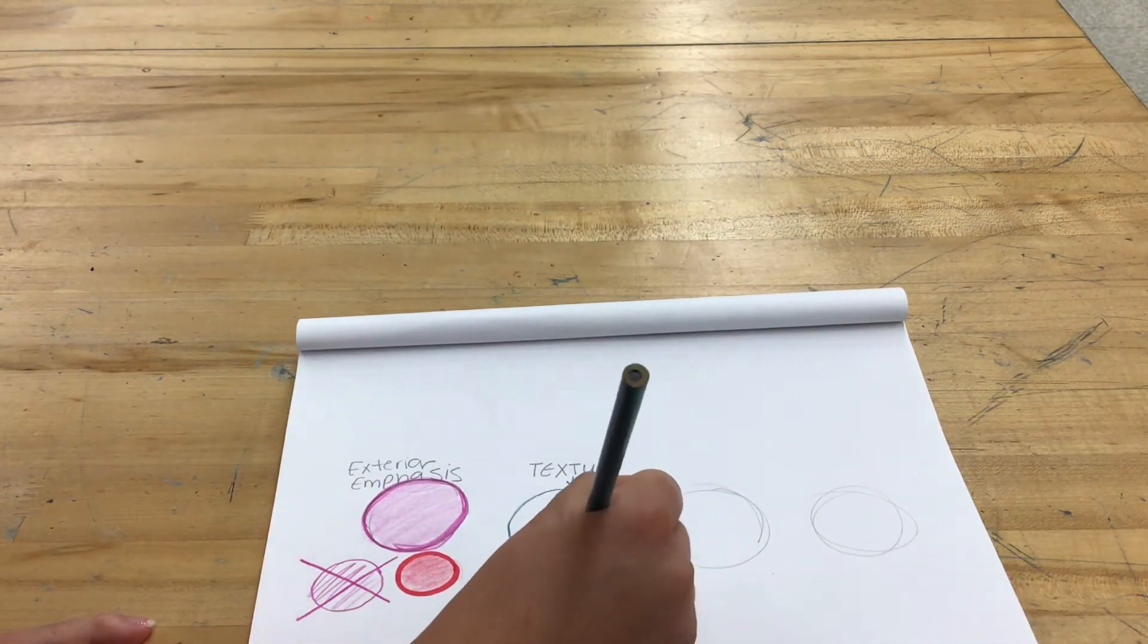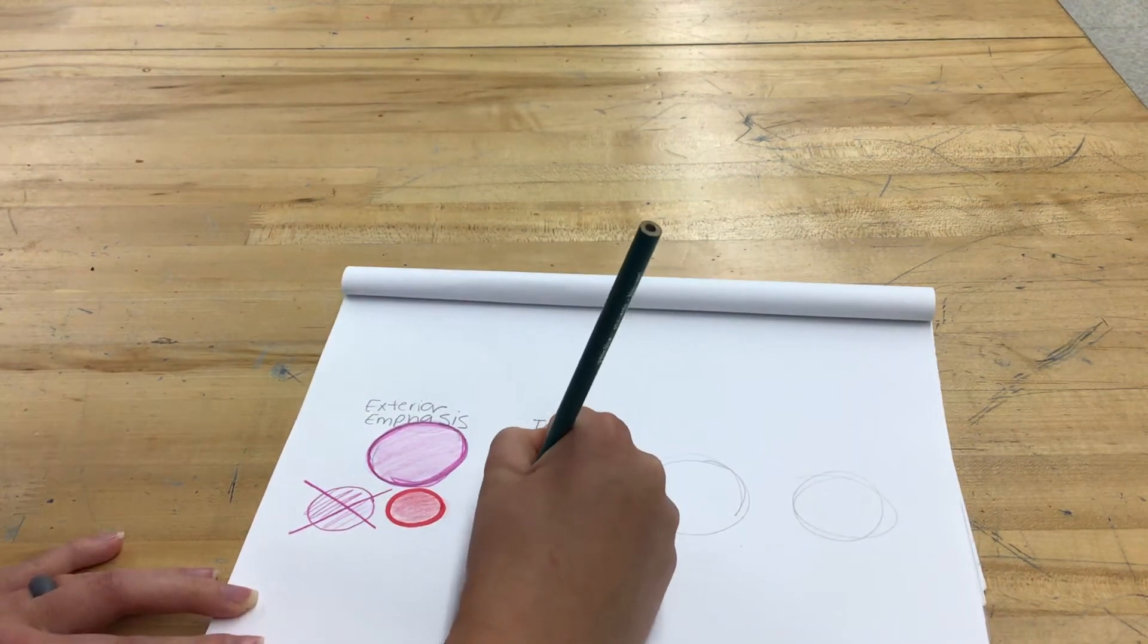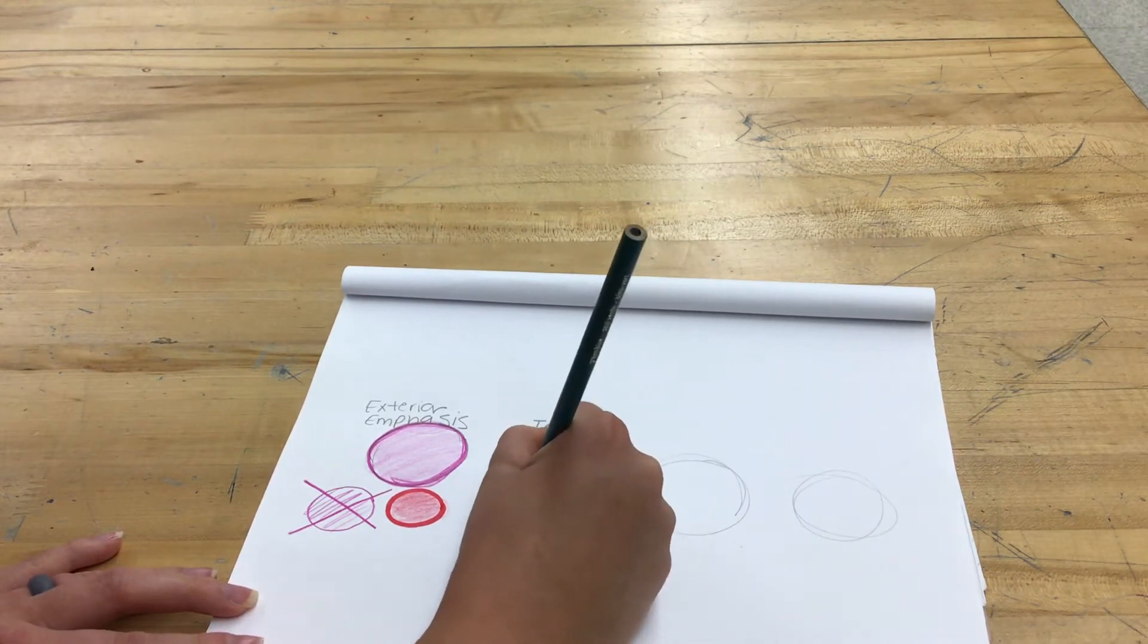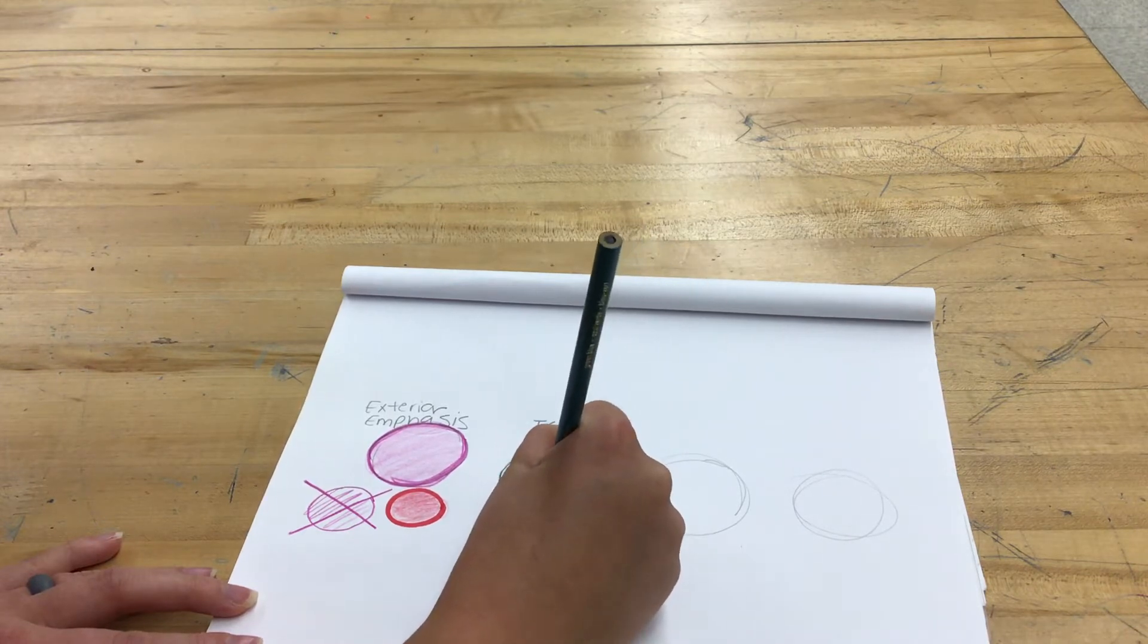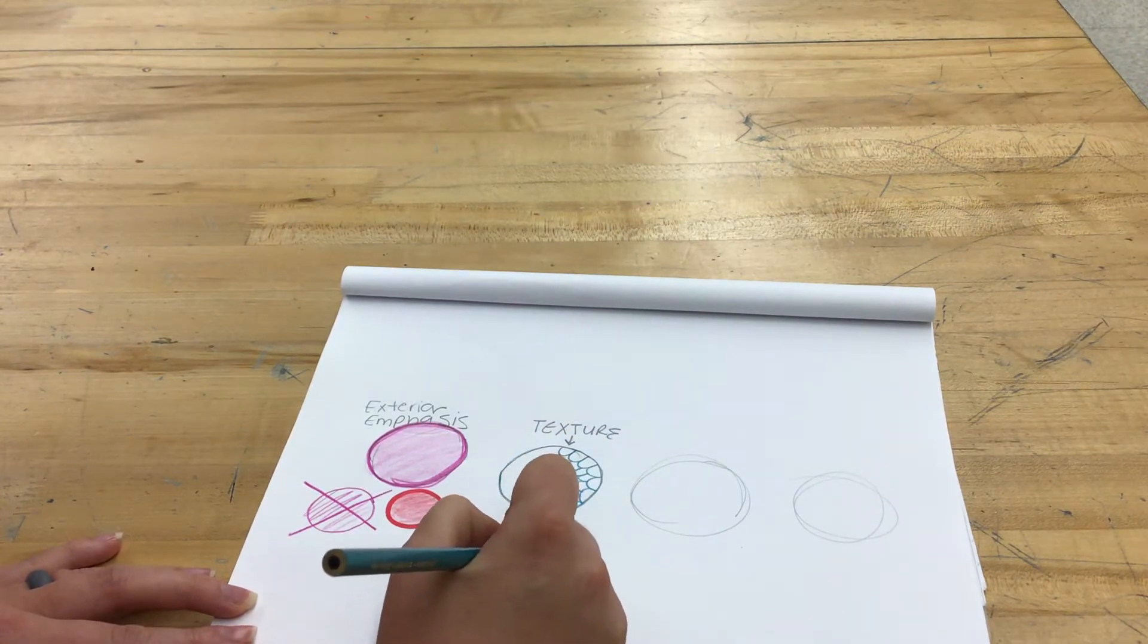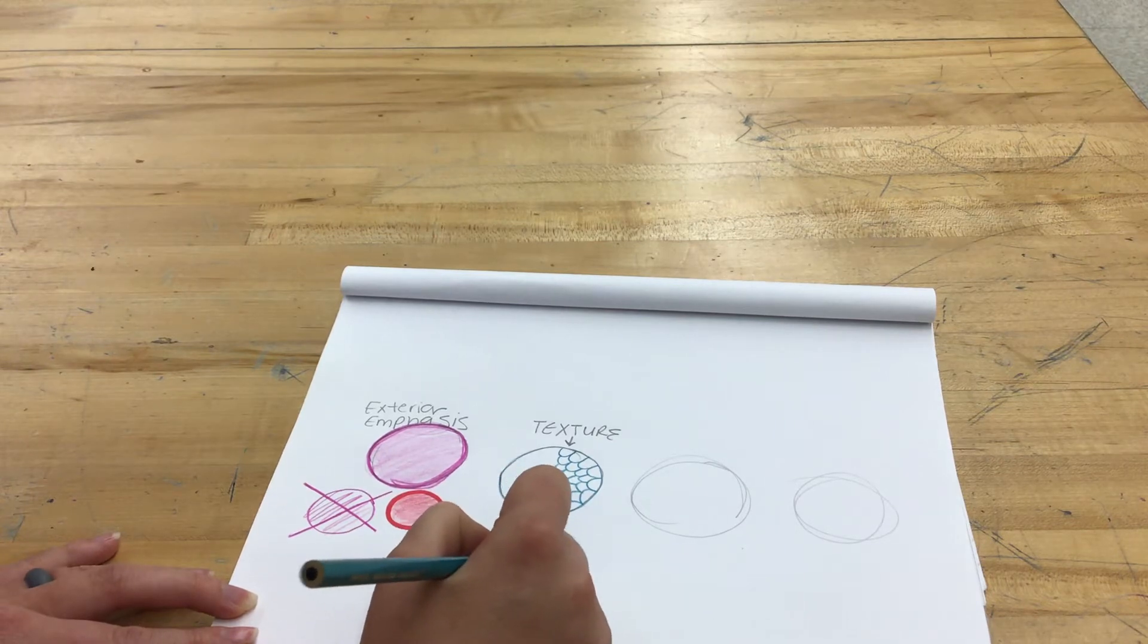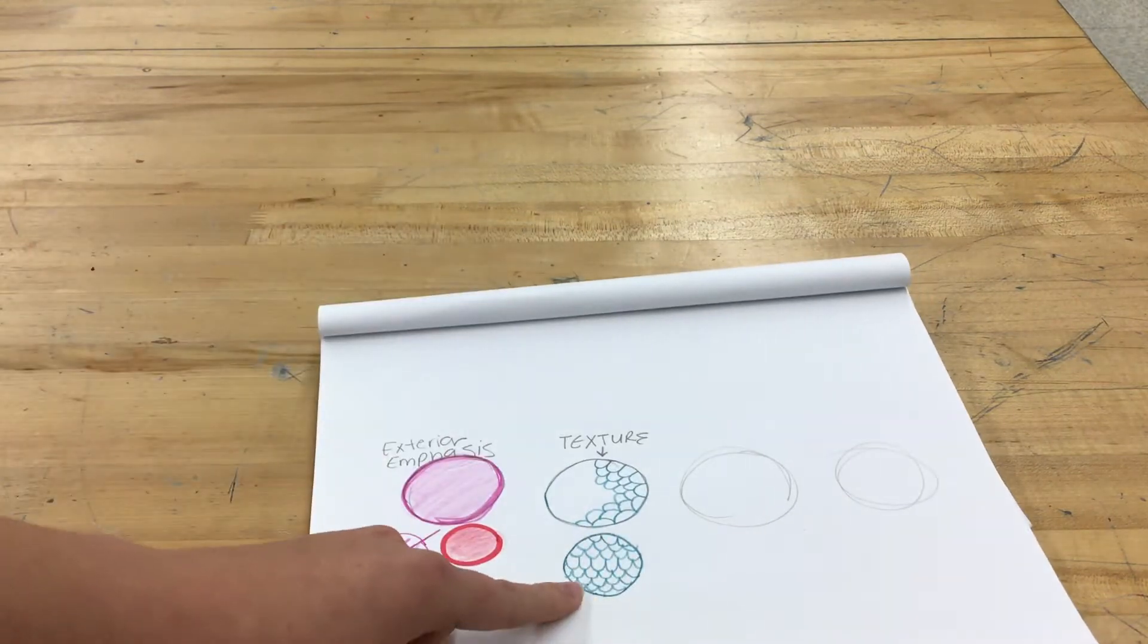I am actually going to start over because I think it would be best to go all the way across like this. So I am pressing, I am putting pressure on my colored pencil to get a darker line. I am going to make this texture go all the way across my object which in this case is a circle.